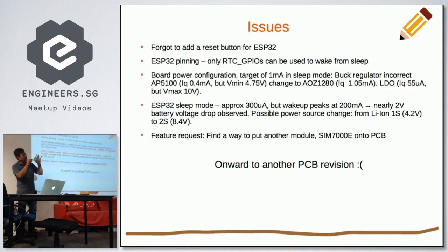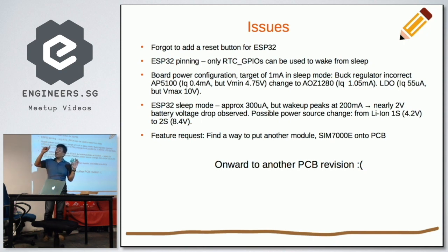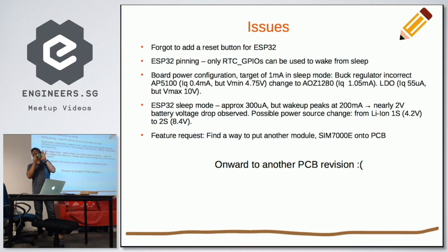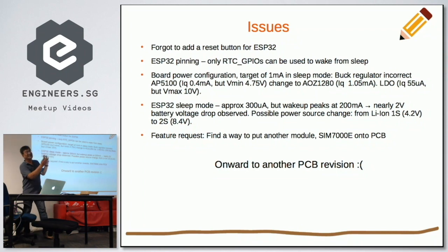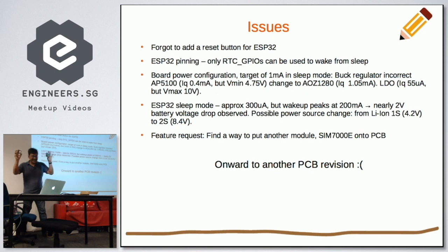Because of that, many things have to change. The charger has to be changed — although the charger is configurable for 4.2 volts, 8.4 volts, or 12.6 volts, the configuration pin is stuck underneath the DFN package, so there's no way I can splice it anymore. I really need a new revision. And then my customer turns back to me: fine, we do a new revision — and feature request: find a way to put the SIM7000 module into the same PCB. So I end my talk here with all my struggles. Another talk next year.